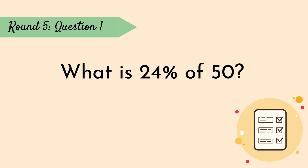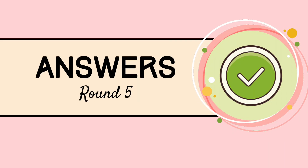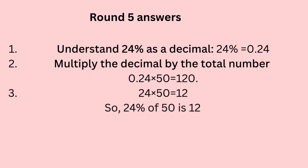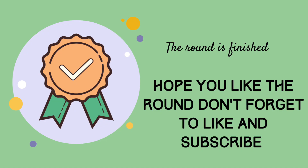What is 24% of £50? First, understand 24% as a decimal: 24% equals 0.24. Then multiply the decimal by the total number: 0.24 times 50 equals 12. So 24% of £50 is £12.